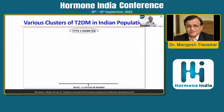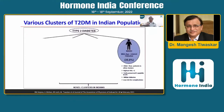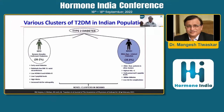Apart from the classical Asian Indian thin-fat phenotype, we found four distinct clusters of diabetes in the Indian population. The commonest is Mild Age-Related Diabetes (MARD), comprising around 35%, where diabetes typically presents in the fourth, fifth, or sixth decade. These patients have normal HDL cholesterol, fairly well-preserved beta cell function, mild diabetes, and are at low risk of complications — this is the classical garden-variety diabetes.